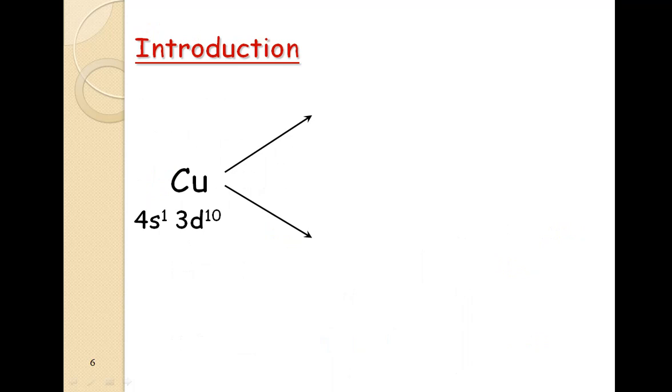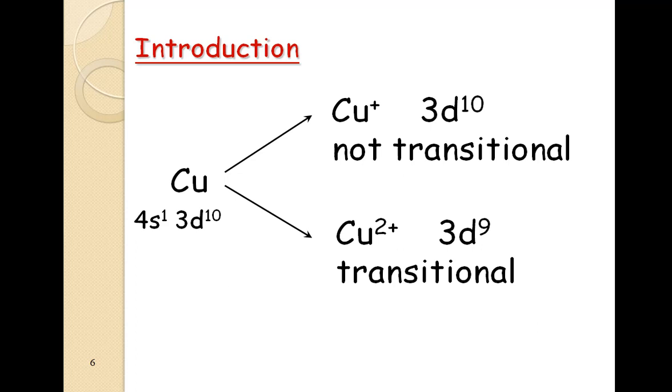Let us take the example of copper. The electronic configuration of copper is 4S1, 3D10. And it exists in 2 oxidation states, Cu plus and Cu plus 2. In plus 1 oxidation state, the configuration is 3D10, so d is completely filled. You can just interpret that it is not transition elements. But if you see, in plus 2 oxidation state, the configuration becomes 3D9, 9 means incompletely filled, so it becomes a transition element.